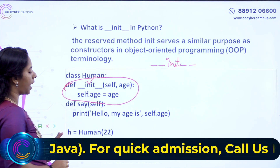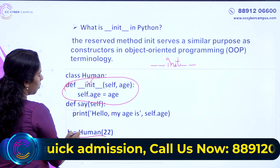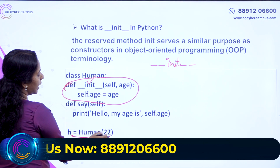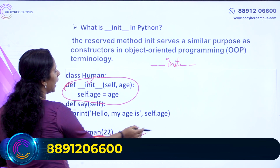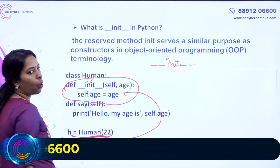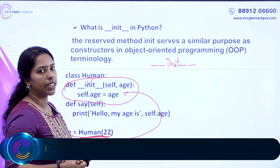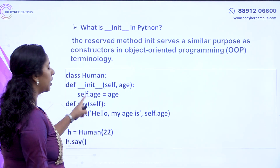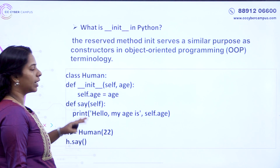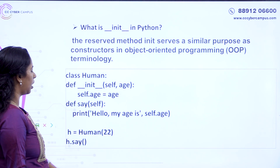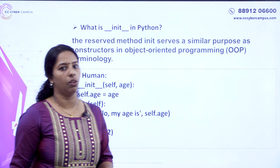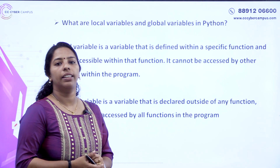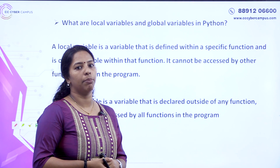We don't need to call this method explicitly. In an object class, we will automatically call this init function. We don't need to call this method separately. Now, what are local variables and global variables in Python? In Python, there are global and local variables.